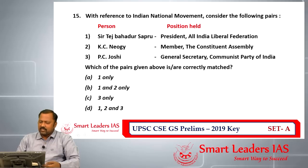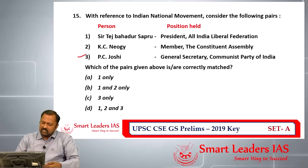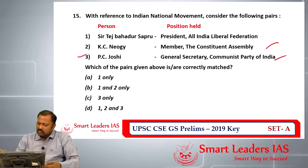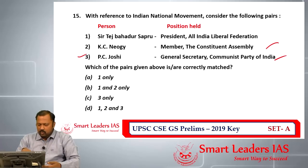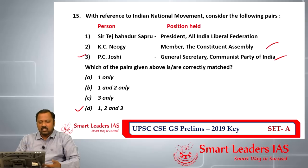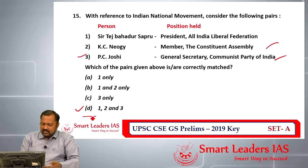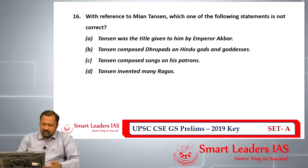Question number fifteen is about pairs related to the Indian National Congress. P.C. Joshi was the General Secretary of the Communist Party of India — statement three is correct. K.C. Neogi was a member of the Constituent Assembly — that is also correct. Since both two and three must be present in the answer, and only option D accommodates this, the answer for question number fifteen is D.